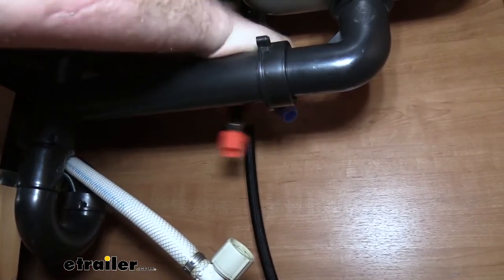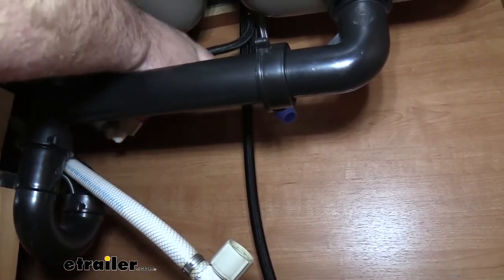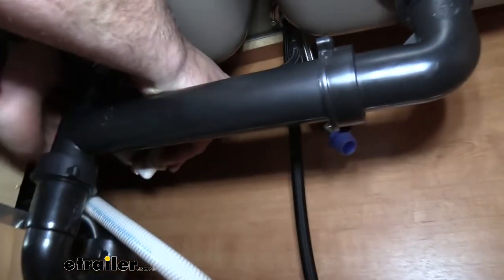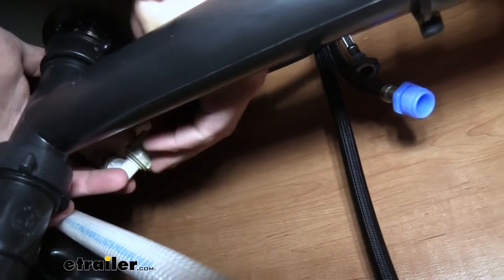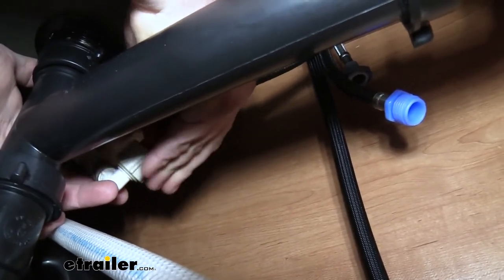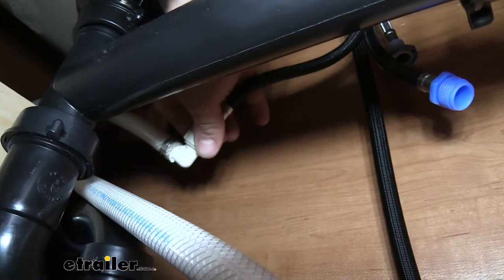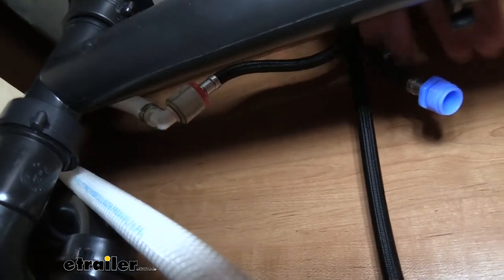Now we're going to take our hot and attach it to our hot line. This is going to be the same thread pitch as before so a simple hand twist should get this tightened up. Go ahead and do that for our cold line as well.